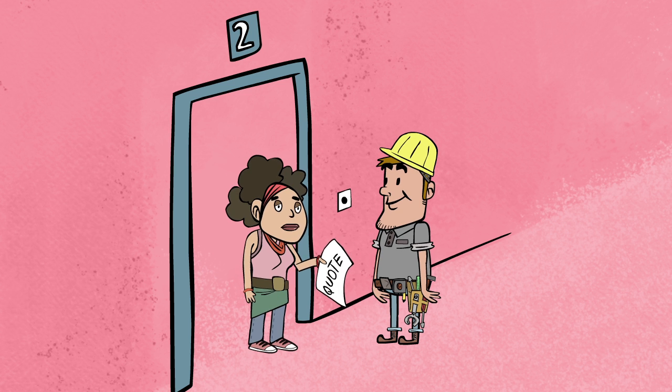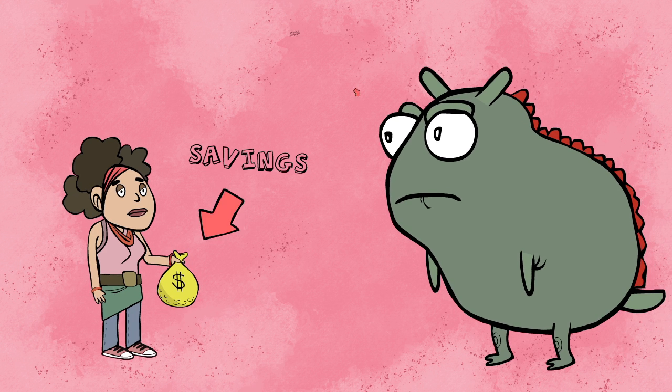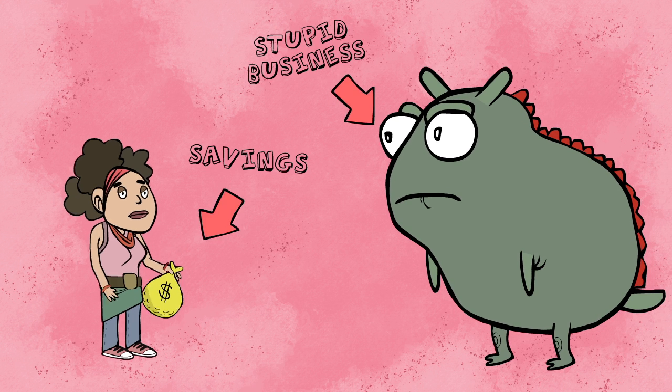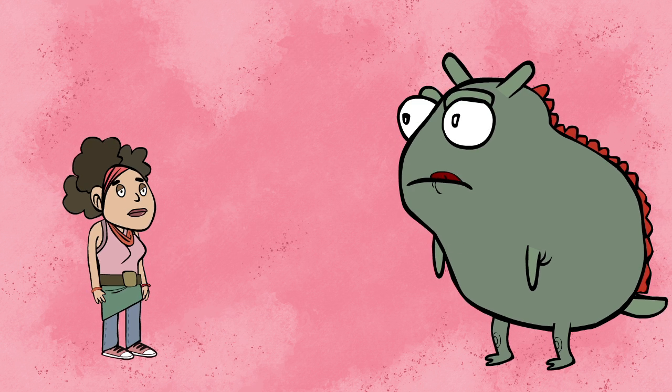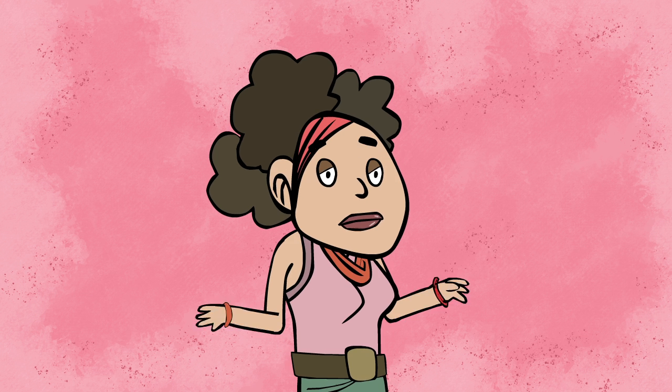Once a customer told Rob that her life was ruined because she invested all her life savings into sunglasses for dogs, called Doggles. As a result, she asked Rob for a discount on the quote.